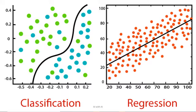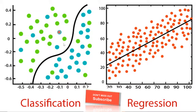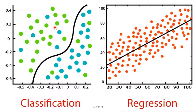Just to understand the differentiation between regression and classification, look at this diagram. On the right-hand side, you have regression, where we draw a best fitting line over the data. The data needs to be in linear fashion so that we can draw a best fitting line over all data points to find out continuous values. Whereas in classification, on the left-hand side, we are again drawing a line, but this time the line is not to best fit on the data but to divide the data into two parts — to classify the data. In regression, we draw a line to best fit over the data to find out the next continuous values. In classification, we draw a line to divide the data so that we can find out where the new data point will fall — whether in the green one or the sky blue one.